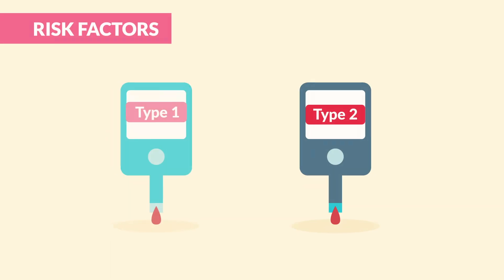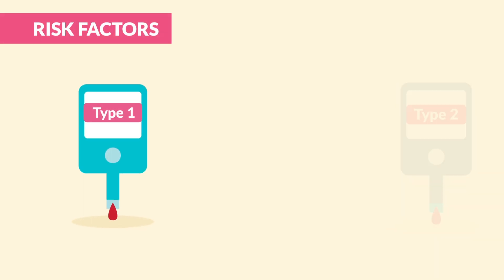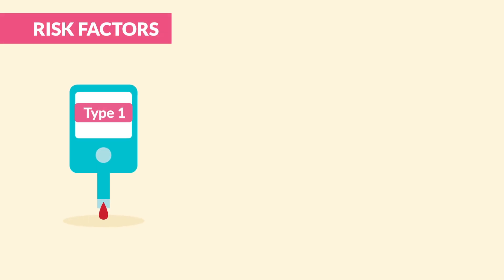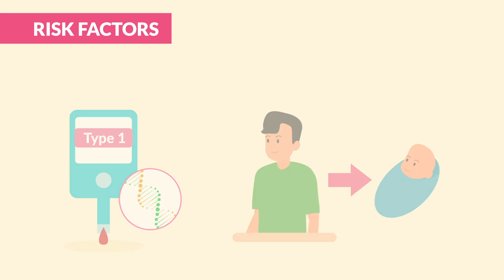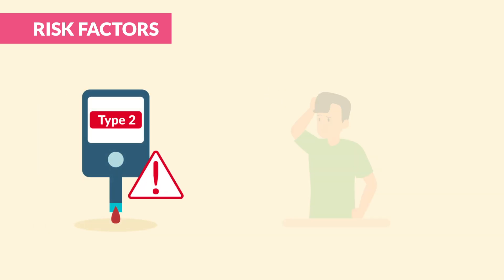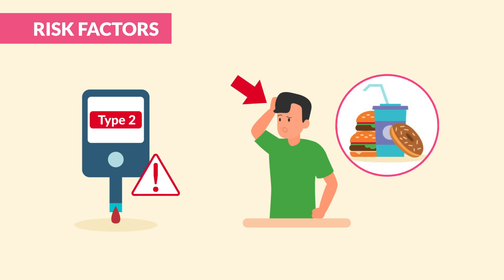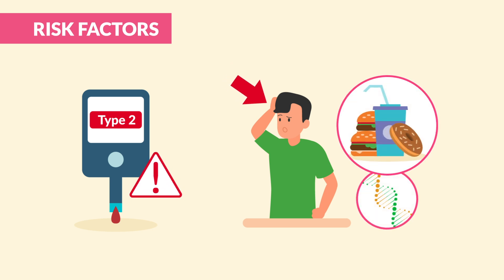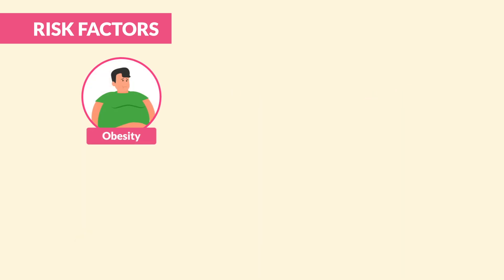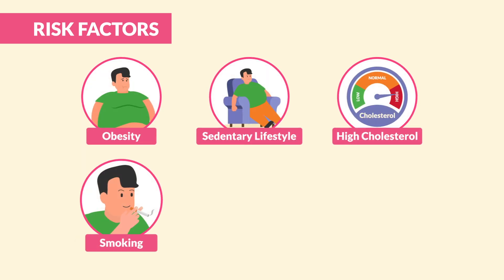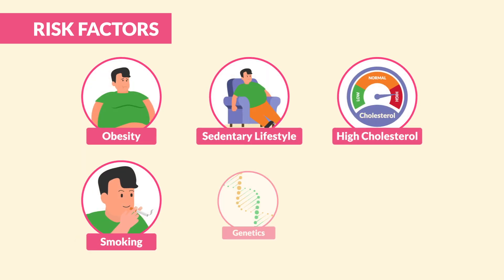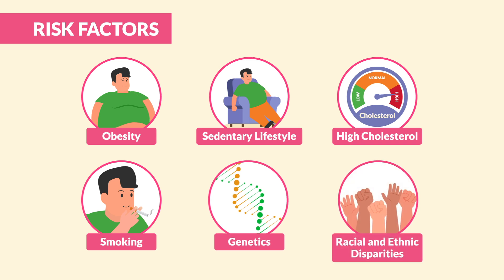Moving over to risk factors: in type 1, there are none — this is a genetic problem that you can pass on to your son with type 1. With type 2, the risk factors are related to you, your diet and lifestyle, and a little bit of genetics. Risk factors include obesity, sedentary lifestyle, high cholesterol, smoking, plus genetics and racial and ethnicity disparities.